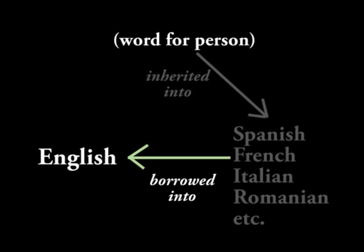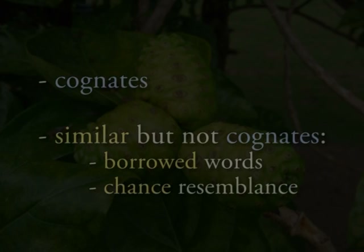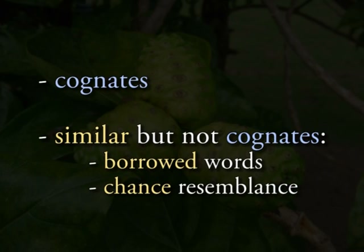So when we find languages like Spanish, Italian, and French that inherited this word from Latin, we can't genuinely say let's compare the English cognate to the French cognate or the English cognate to the Spanish cognate, because at some point English borrowed that word whereas the other languages inherited it. At this point you have some understanding of cognates in language and an understanding of similarities that show up due to things other than cognates — namely borrowing and chance.